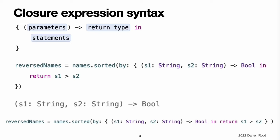The start of the closure's body is introduced by the in keyword. This keyword indicates that the definition of the closure's parameter and return type have finished, and that the body of the closure is about to begin. Because the body of the closure is so short, it can even be written on a single line. This illustrates that the overall call to the sorted-by method has remained the same. A pair of parentheses still wrap the entire argument for the method. However, that argument is now an inline closure.